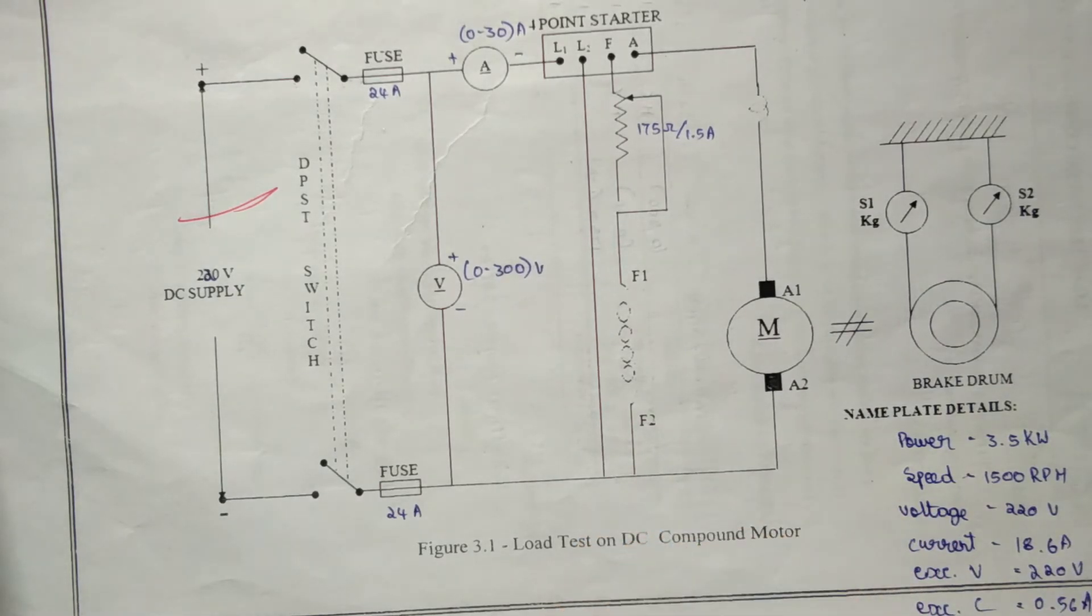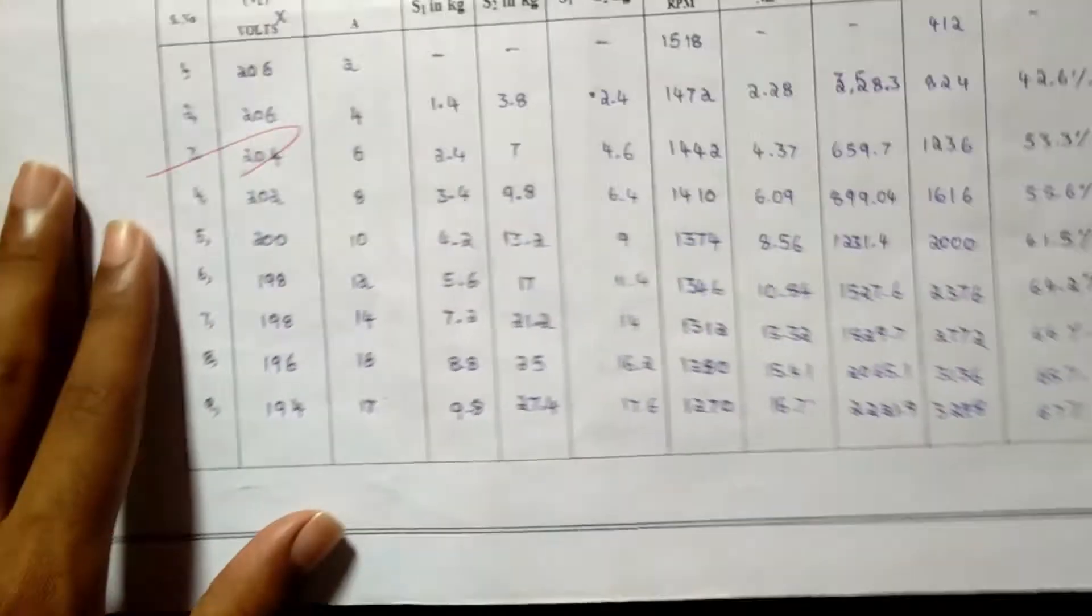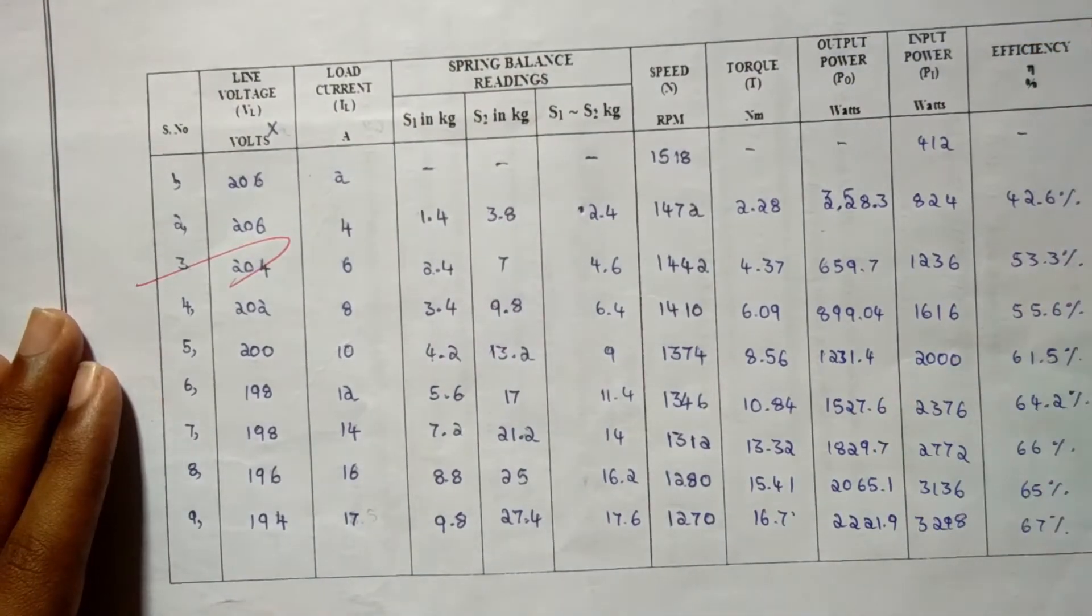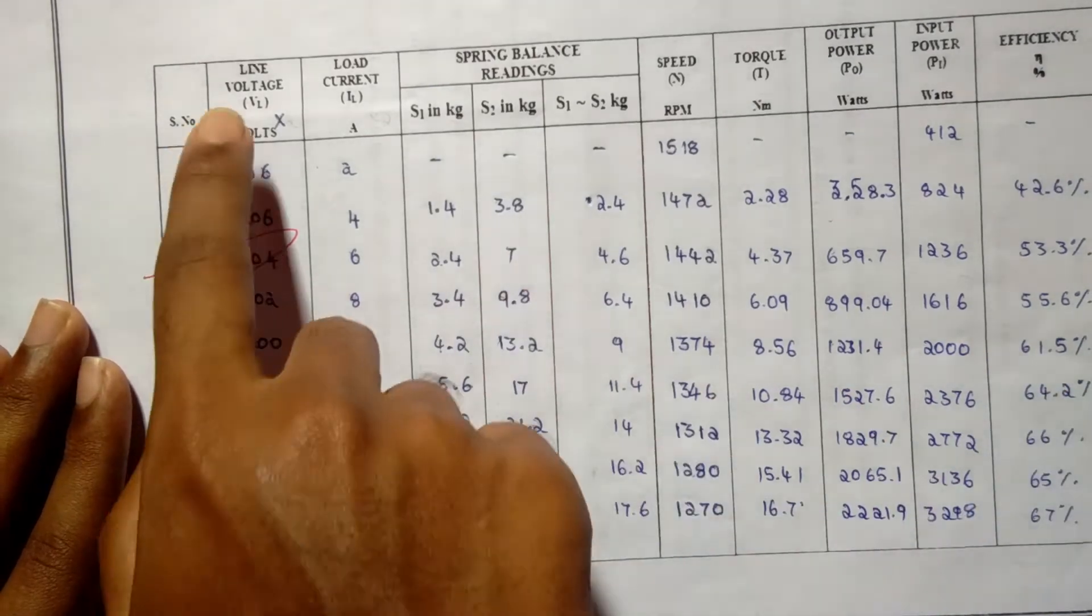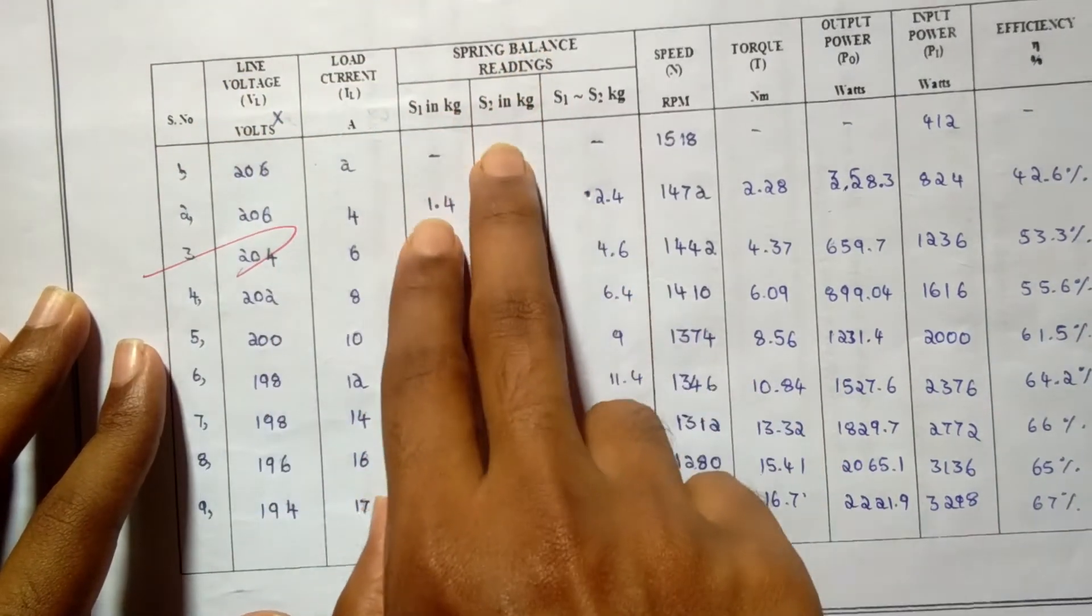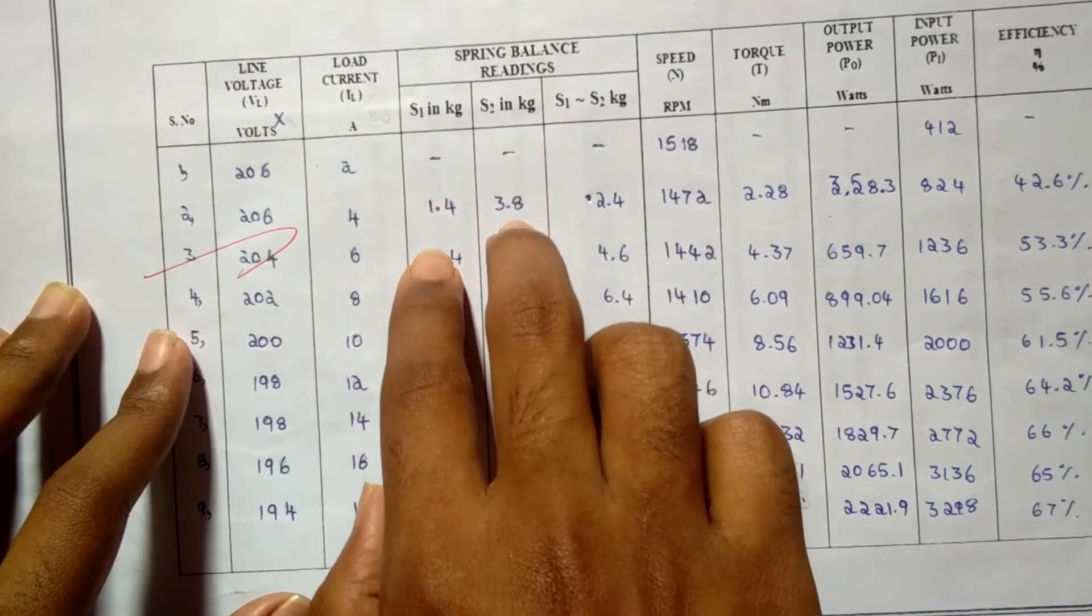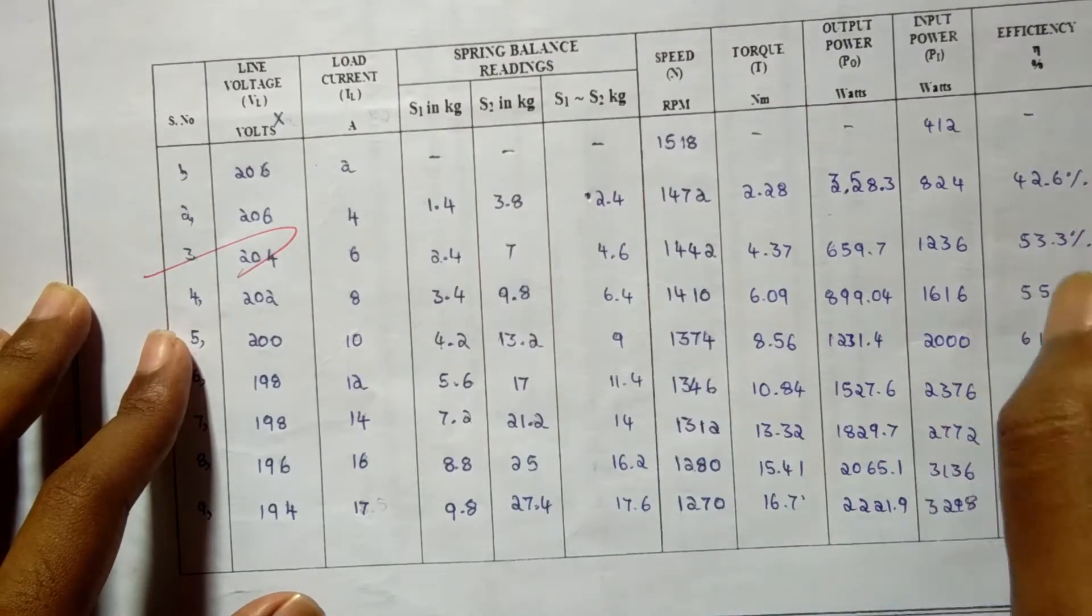Finally, the performance characteristics are drawn using the tabulated readings and calculations. This is the tabulation for this experiment. This is the line voltage, load current, and spring balance reading. S1 difference S2 is the difference between the spring balance readings.